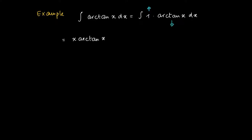So we get a product of x, which is the primitive of 1, times the original function arctan x, minus the primitive of 1 times the derivative of arctan x, which is 1 over 1 plus x squared.